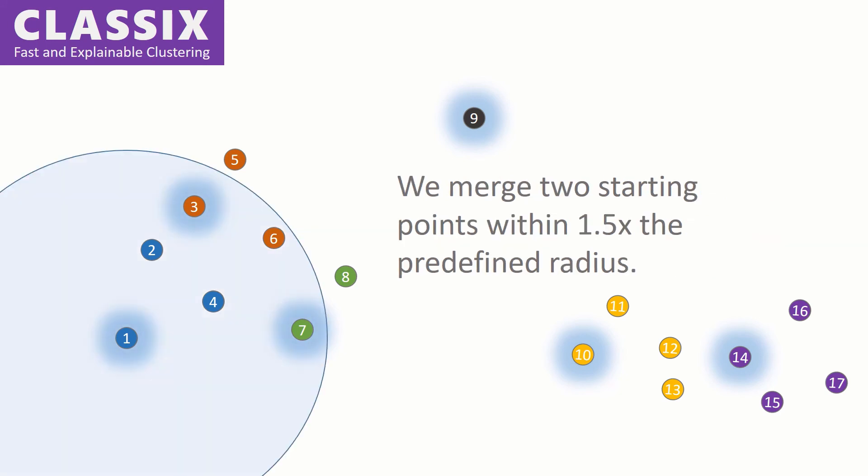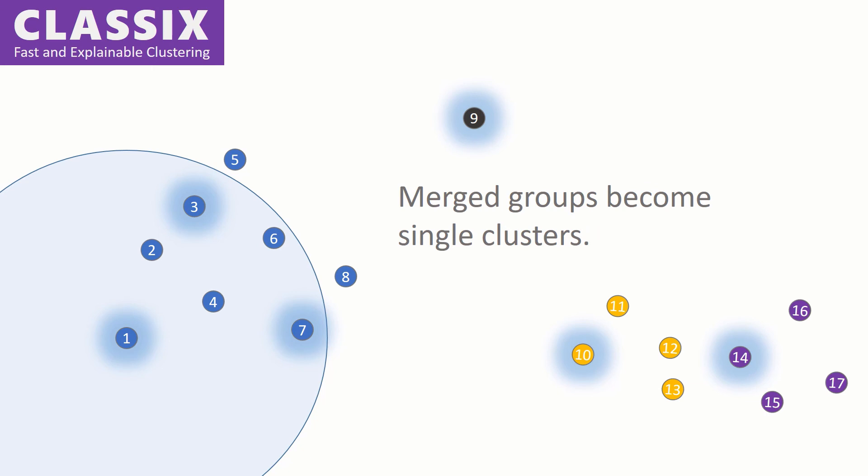We merge two starting points when they are within 1.5 times the predefined radius. Merged groups become single clusters.